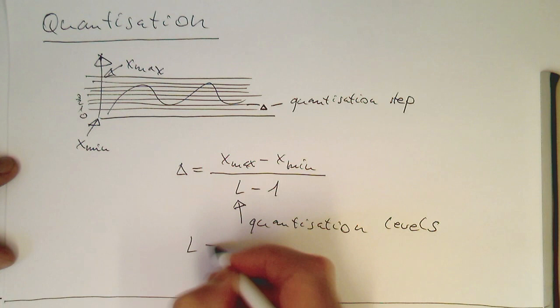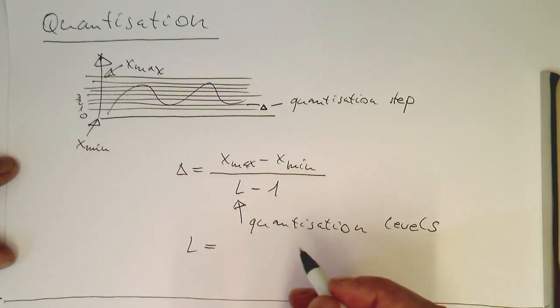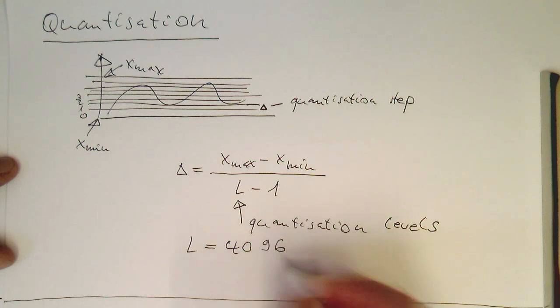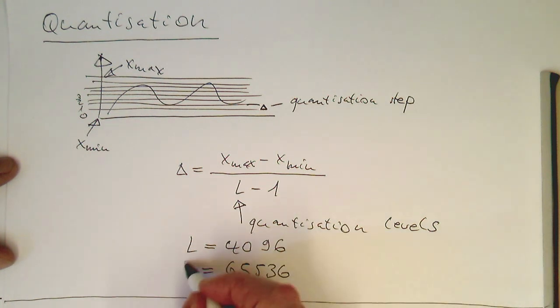Here are typical values for L, for example 4096, that's 12 bit, or 65536, that's 16 bits.